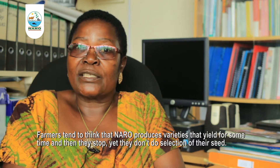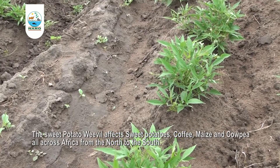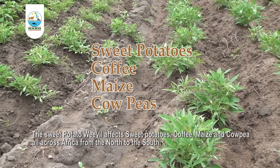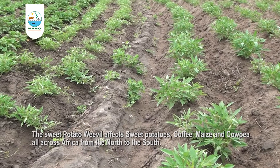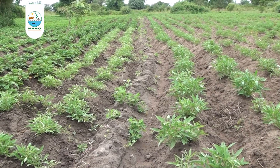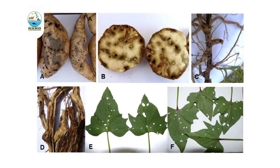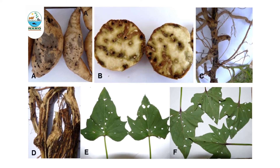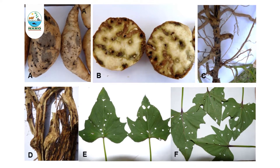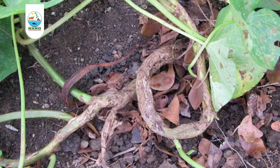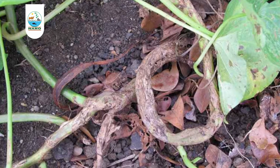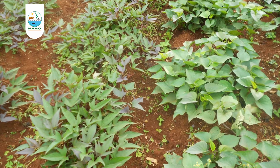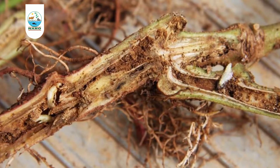The sweet potato weevil affects sweet potatoes, coffee, maize, and cowpeas all across Africa from north to south. Adult weevils feed on leaves, tubers, and vines. They prefer to feed on the tubers, but at the beginning of the growing season when the tuber has not yet developed, they will feed on the stems and leaves. They lay eggs in the vines and leaves, and the grubs feed on the stems and leaves as well.